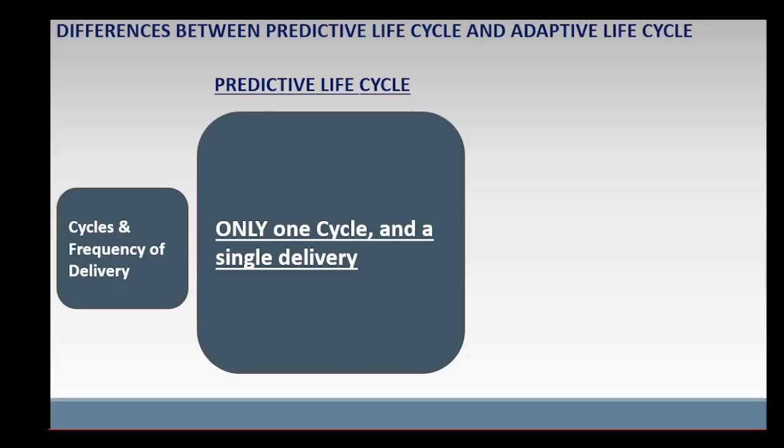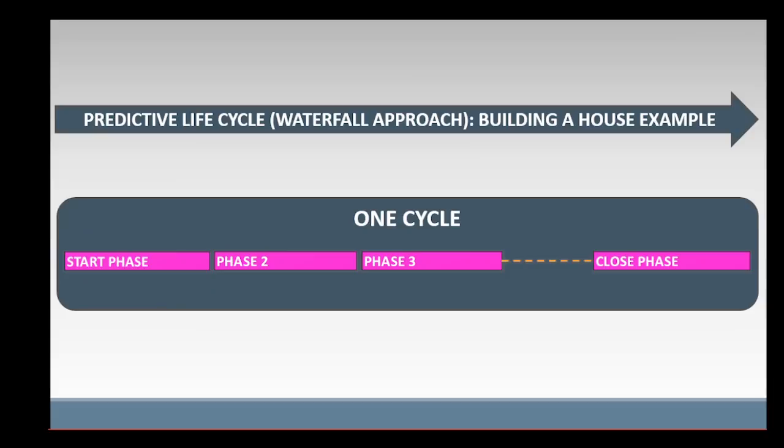In terms of cycles and frequency of delivery, in predictive life cycle, there is only one cycle and a single or big bang delivery of the full product at the end of the cycle. For example, the entire housing project is completed and delivered at the end of one cycle.